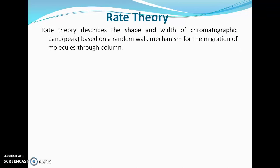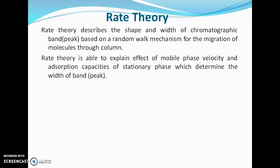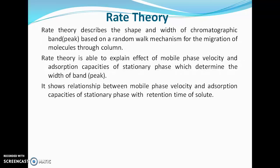Rate theory describes the shape and width of a chromatographic band based on a random walk mechanism for migration of solute through the column. Rate theory is able to explain the effect of mobile phase velocity and adsorption capacities of the stationary phase, which determine the width of the band. It also shows the relationship between mobile phase velocity, adsorption capacities, and retention time.